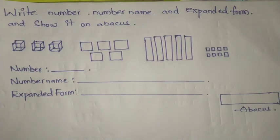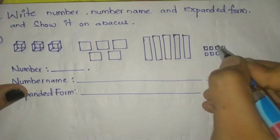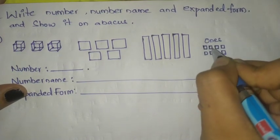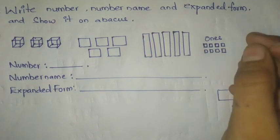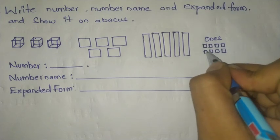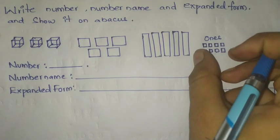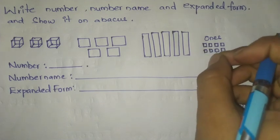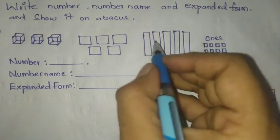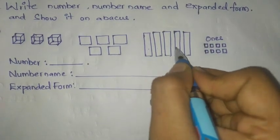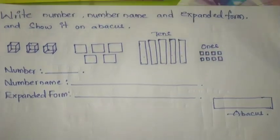These small small boxes represent ones — in your textbook these are in red color. These strips represent tens — in your textbook these are in green color.